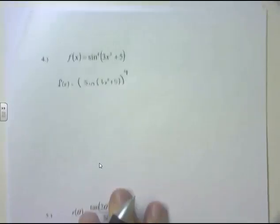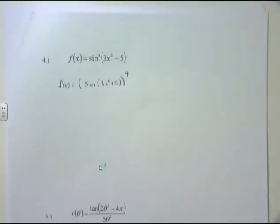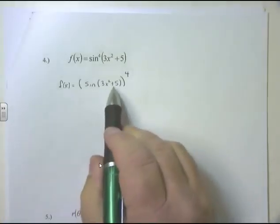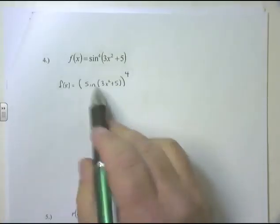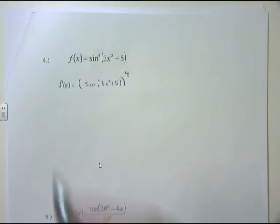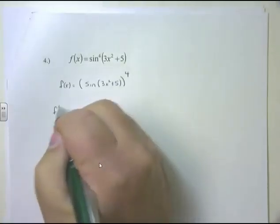Now what do I see? I've got sin(3x² + 5) on the inside, raised to the fourth power on the outside — this is the chain rule. The fourth power is on the outside, and I've got this function on the inside. So we apply the chain rule.